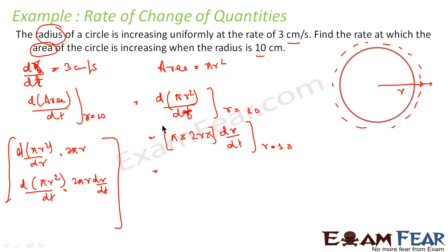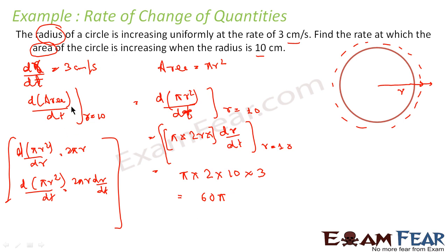Now dr/dt is 3 and r is 10, so putting in the values: 2 pi times r (which is 10) times dr/dt (which is 3) gives 60 pi. The unit is change of area with respect to time, so this is centimeters squared per second.